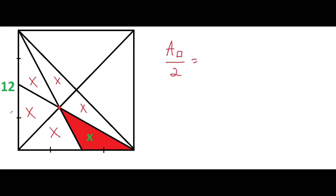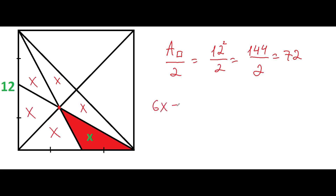The area of the square will be 12 squared. So 12 squared over 2 will be 144 over 2, which equals 72. We can divide it, and we can add up 6 X's: 6X will be equal to 72. And if we divide both sides by 6, we will get X equal to 12.